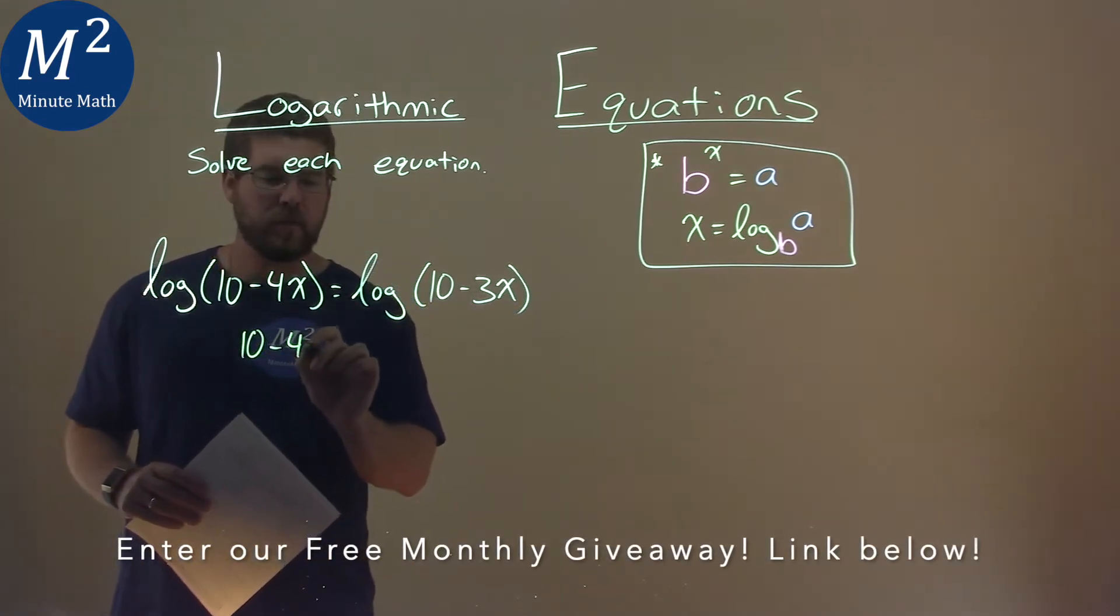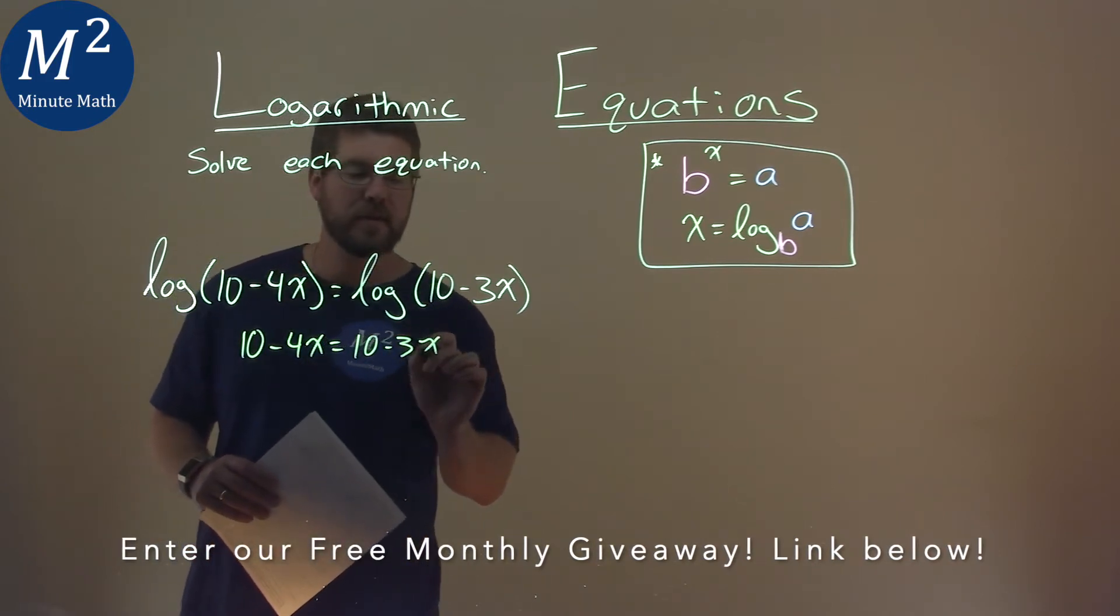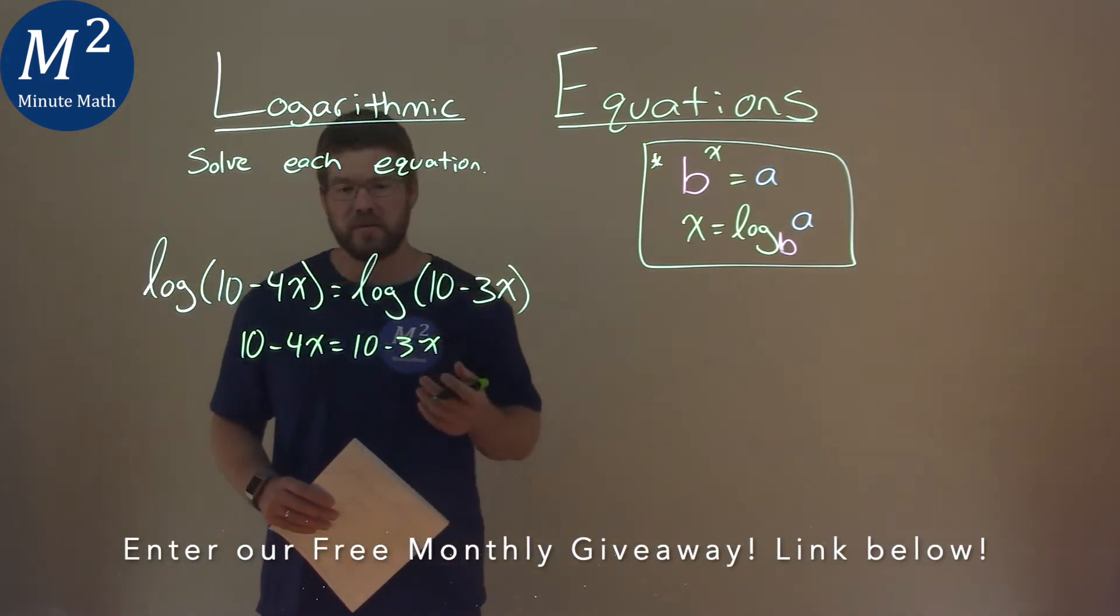So we have the 10 minus 4x equals a 10 minus 3x, and now we're just solving for x.